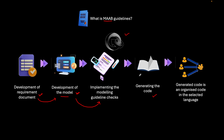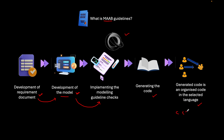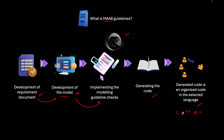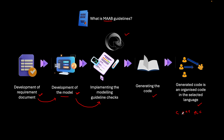The next stage is the generation of code from the developed model. If you follow the guidelines, the MAB guidelines will help you develop well-defined code. The generated code can then be distributed by selecting a defined language — you can select C, C++, PLC, and many other languages through which you can generate code and then deploy it into the hardware. We also have a code generation tutorial series on this channel.